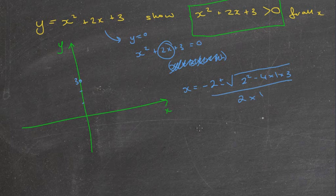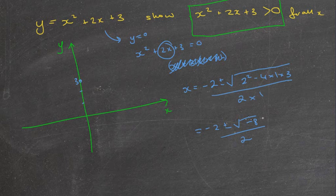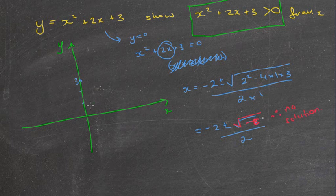Substituting: x = (-2 ± √(4 - 12)) / 2, which gives √(-8). We have a negative number under the square root — that cannot work. This means there are no real solutions, which means the parabola does not cross the x-axis at all.